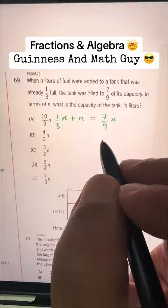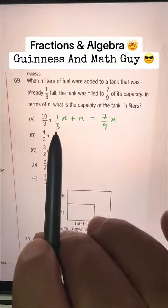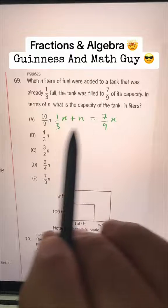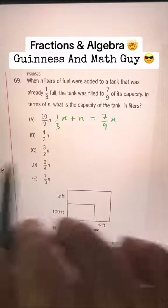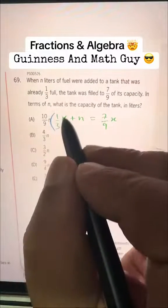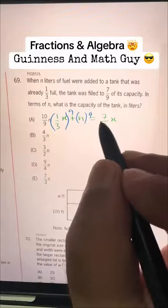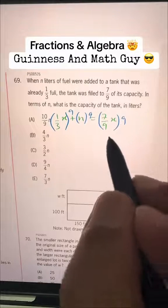Now, we can see the denominators here, 9 and 3, and 9 is a multiple of 3. So let's multiply all the equation by 9 to get rid of the denominators. Every term will be multiplied by 9, here also 9, here also we will multiply by 9.